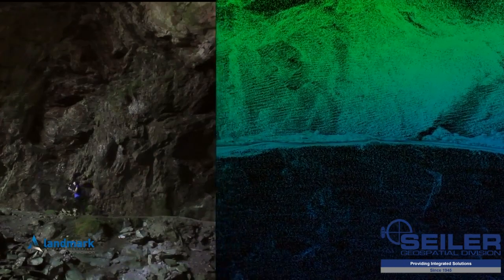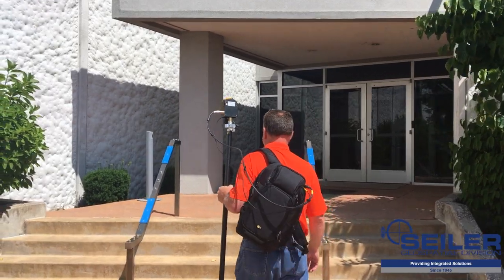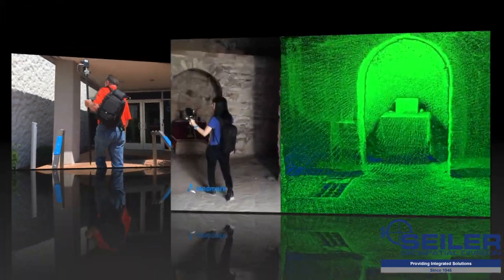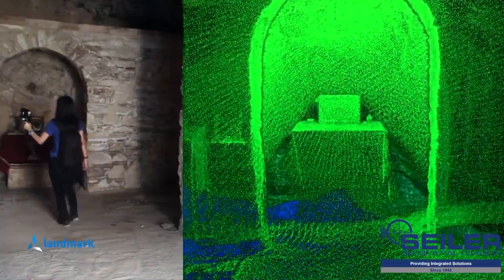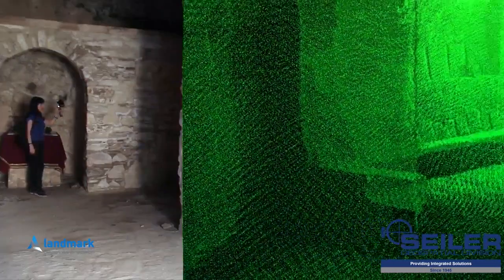The Geoslam Zebrevo works in three simple steps. One: Scan. The device is up and running within minutes. Go anywhere. You simply walk and scan your target environment with no need for GPS or expensive motion sensors.